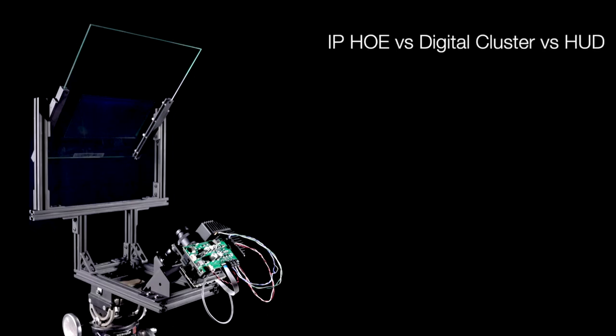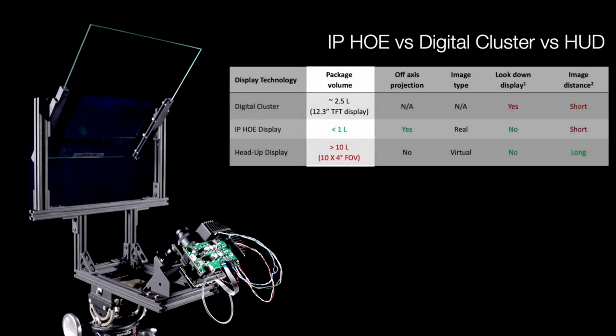For windshield applications, the main advantage of an IP HOE display is the relatively small packaging space required to support a large field of view. Traditional head-up displays require significant space to support large displays, and the majority of vehicles simply don't have that space available to support a large display.